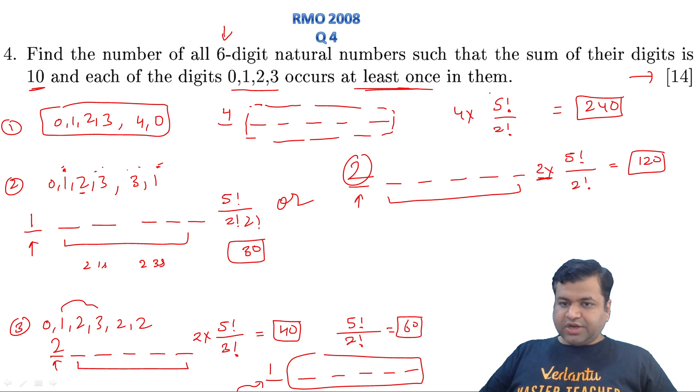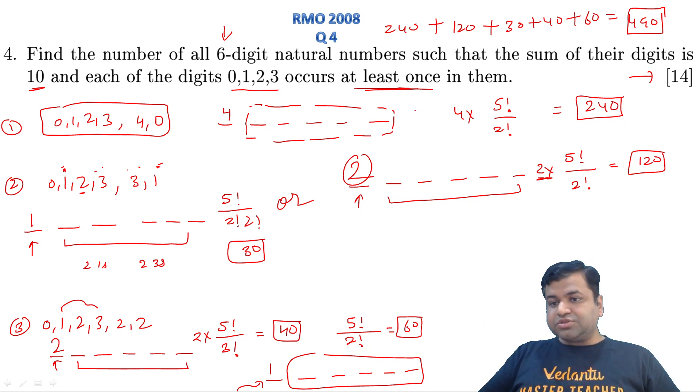So the final answer will be 240 + 120 + 30 + 40 + 60. Let me calculate: 240, 120 is 360, 360 plus 390, plus 100, 490. So 490 will be the final answer. These are the number of distinct six-digit numbers in which 0, 1, 2, 3 appear at least once. So look, there was nothing to it. Total 3 cases were made, and further in these 2 cases, further cases were made. So in total, if we sum up, 5 cases were made. So 14 marks were given free to those who prepared properly. For them this question would have been easy.